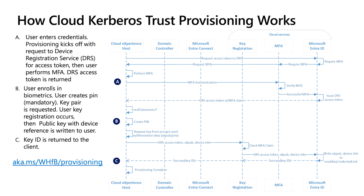When we look under the hood at how Cloud Kerberos Trust provisioning works — after we target our users with group policies and the user device registration checks all pass — the user would enter their credentials, which we can assume for this purpose is a username and password. Then when we start provisioning, the provisioning app will pop up, and under the hood the app will request an access token from the device registration service. The user will hit next and be prompted for MFA. When that's successful, the device registration service will issue an access token and monitor MFA throughout the process to ensure the user always has a valid MFA claim and nothing is revoked.